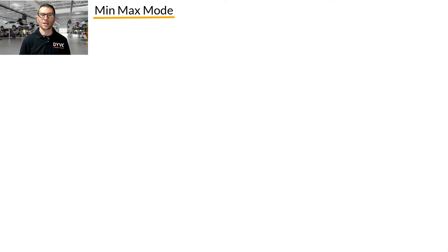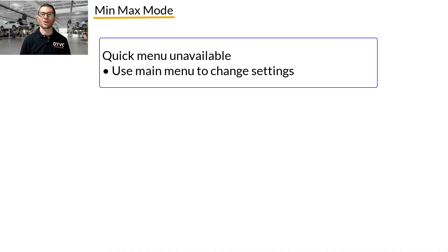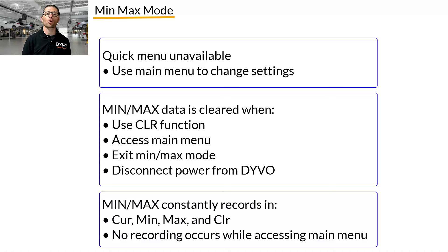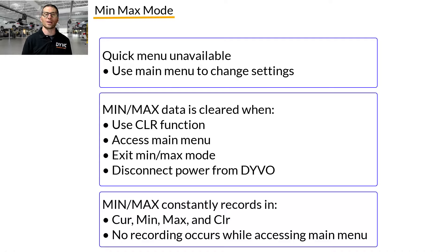A few things to note with min-max mode: the quick menu options are not available in min-max mode. However, you can still access the main menu by pressing and holding the mode button for approximately five seconds. If you access the main menu, exit min-max mode, or disconnect power from Devo, the recorded values will be lost. Devo continues to record data in all the min-max views, including when you're in the clear screen. No values are recorded while in the main menu.